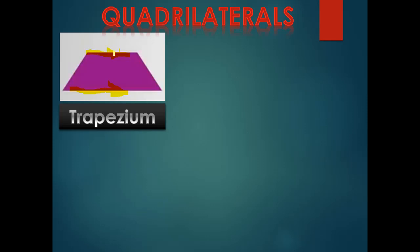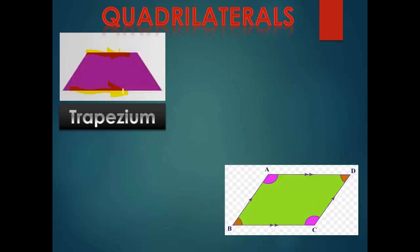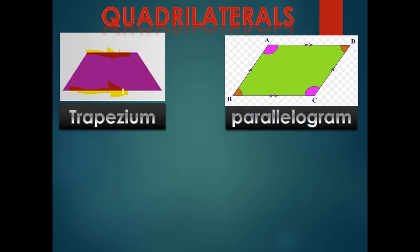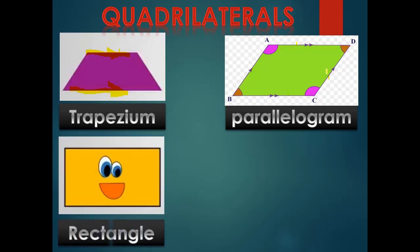Each two opposite sides are parallel — that's the trapezium. Another one — we call it a parallelogram. In a parallelogram, each two opposite sides are parallel: this side and this side are parallel, and this side and this side are parallel. We call it a parallelogram.